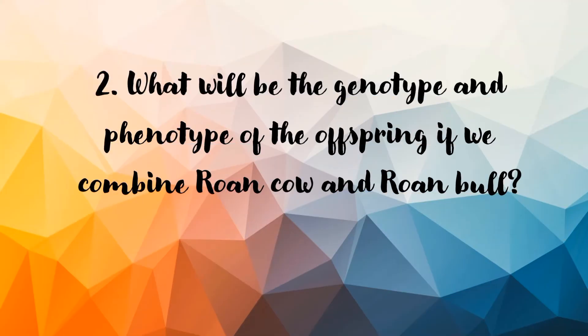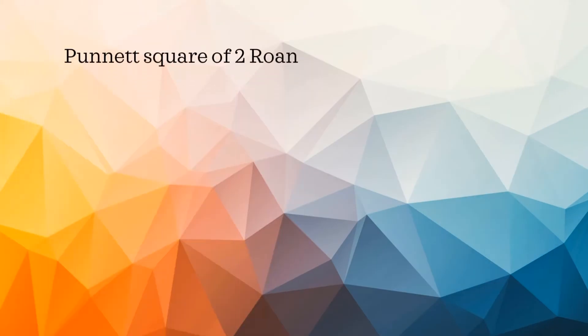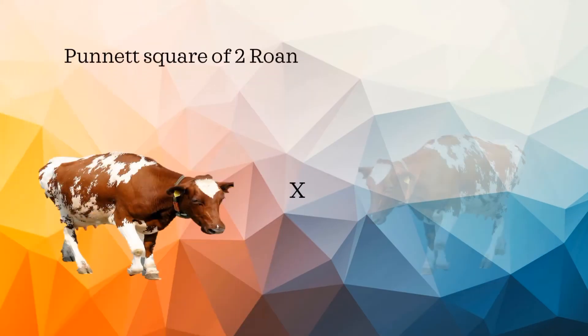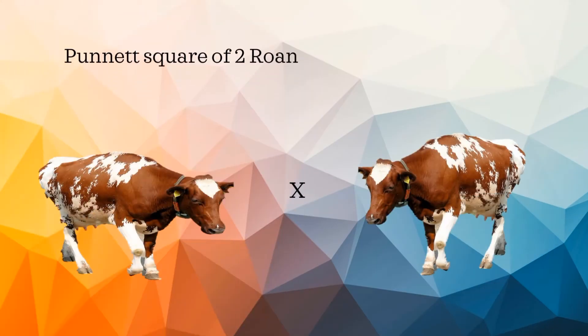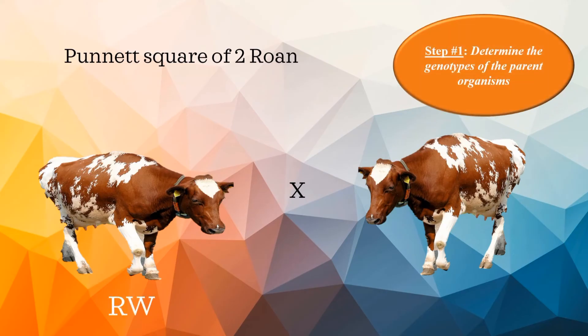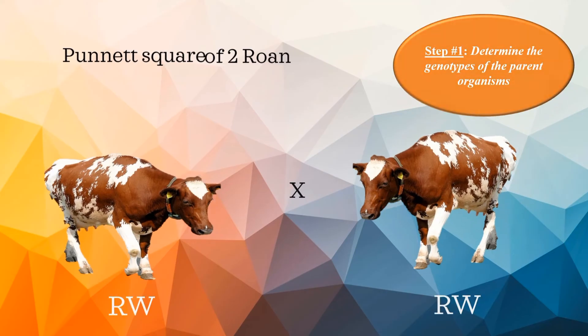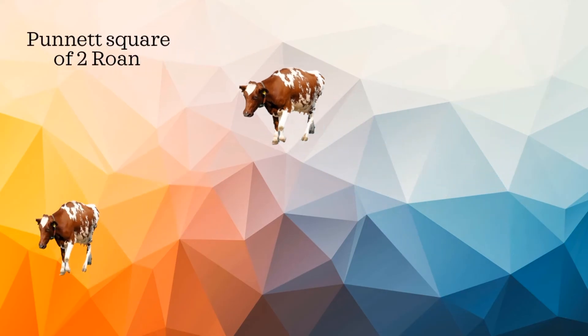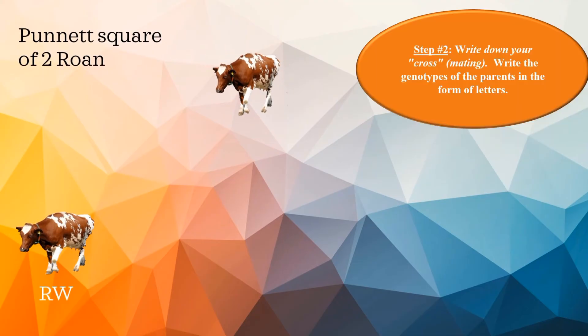Now, what will be the genotype and phenotype of the offspring if we combine a rowan cow and a rowan bull? Again, we are going to determine the genotype of the parent organisms. For this example, the genotypes are both RW, or heterozygous rowan. Now we are going to solve it using the Punnett square.